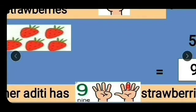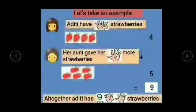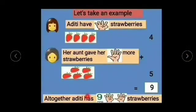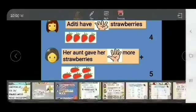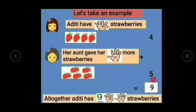6, 7, 8, 9. All together Aditi has how many strawberries? 9 strawberries. So 4 plus 5 is 9. This is how we do addition.